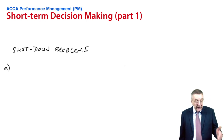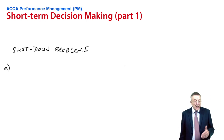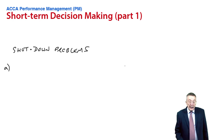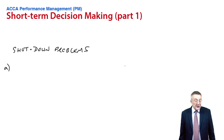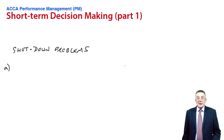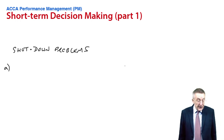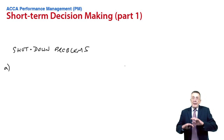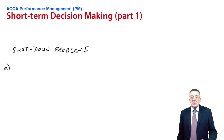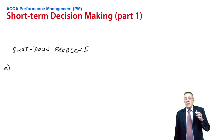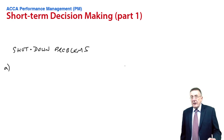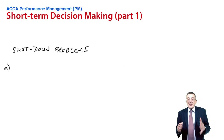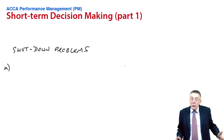Part A requires us to consider whether the company should cease production and sale of rooks. The important thing here is the fixed costs. The total fixed costs for the business are 55,000. To do that analysis, they've split and allocated them between pawns, rooks, and bishops. But remember — total fixed costs, by definition, stay fixed whatever we end up producing.